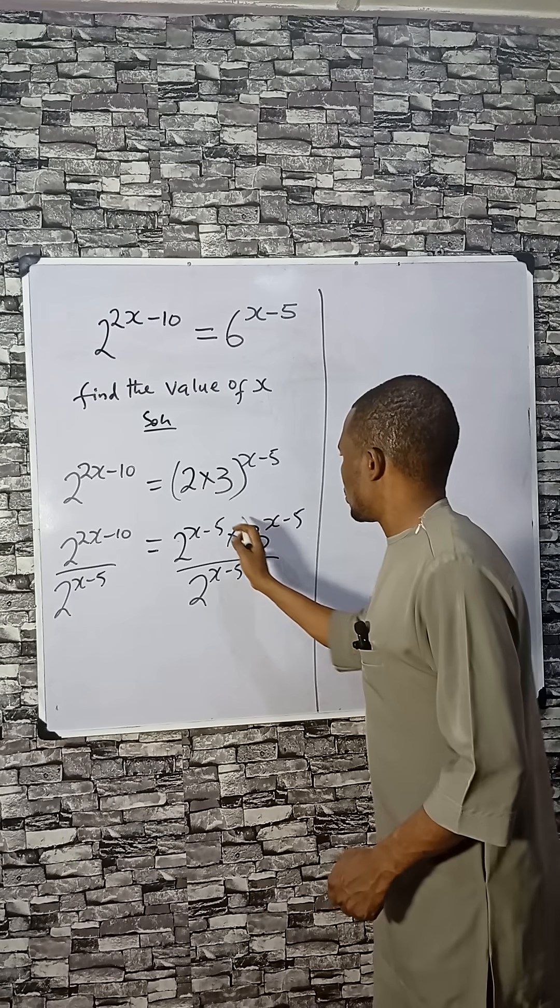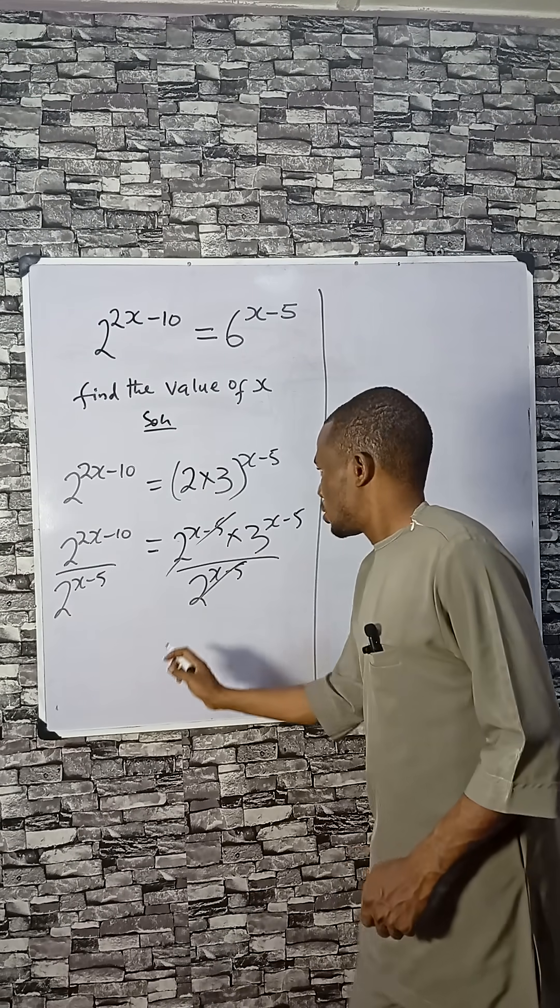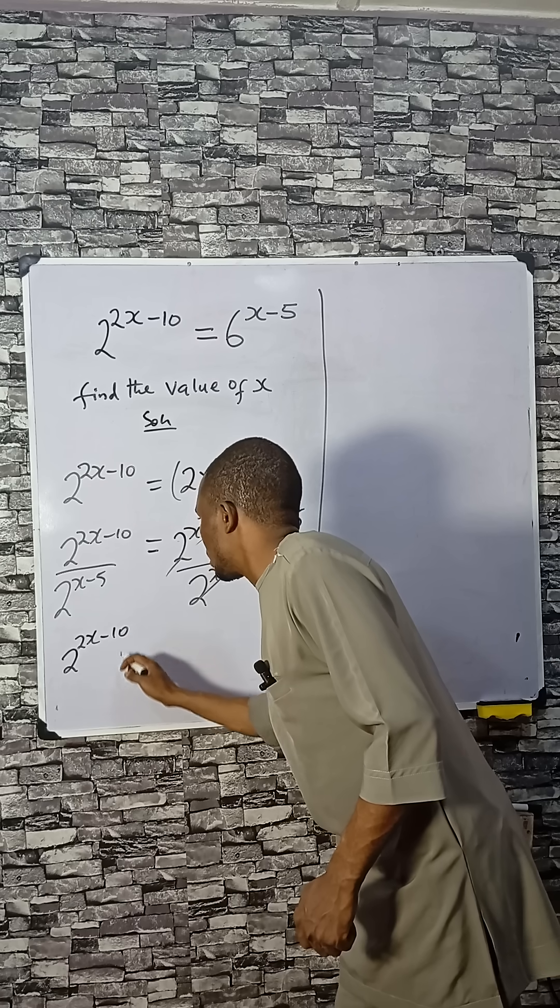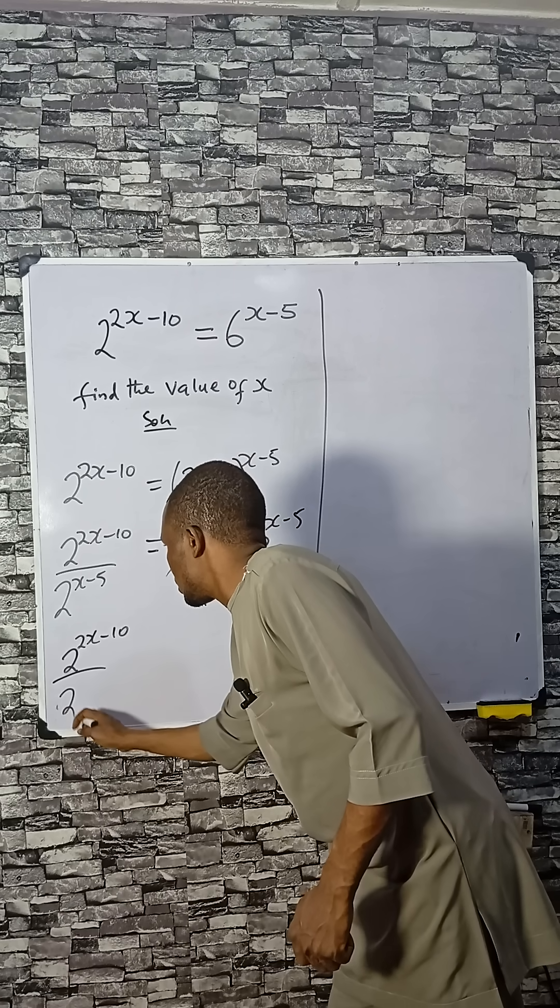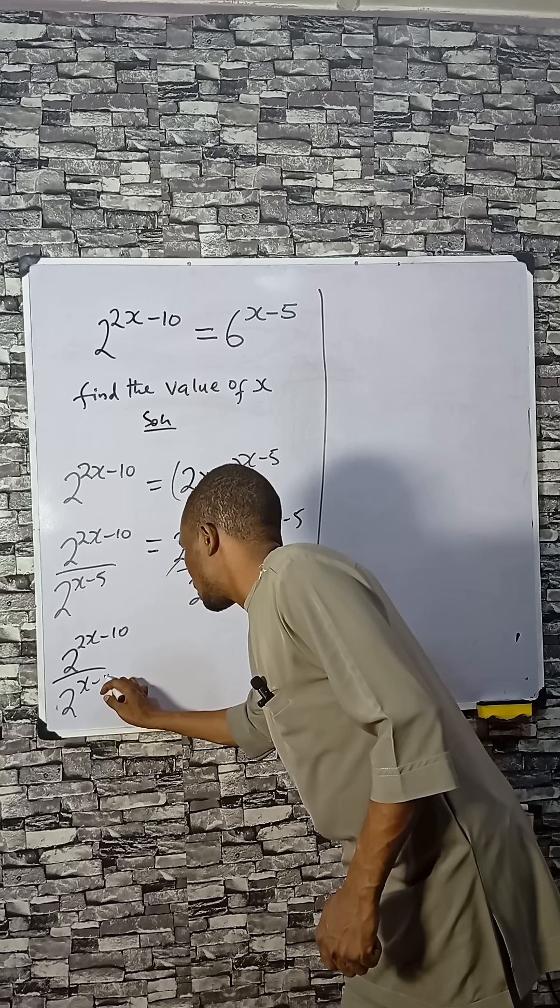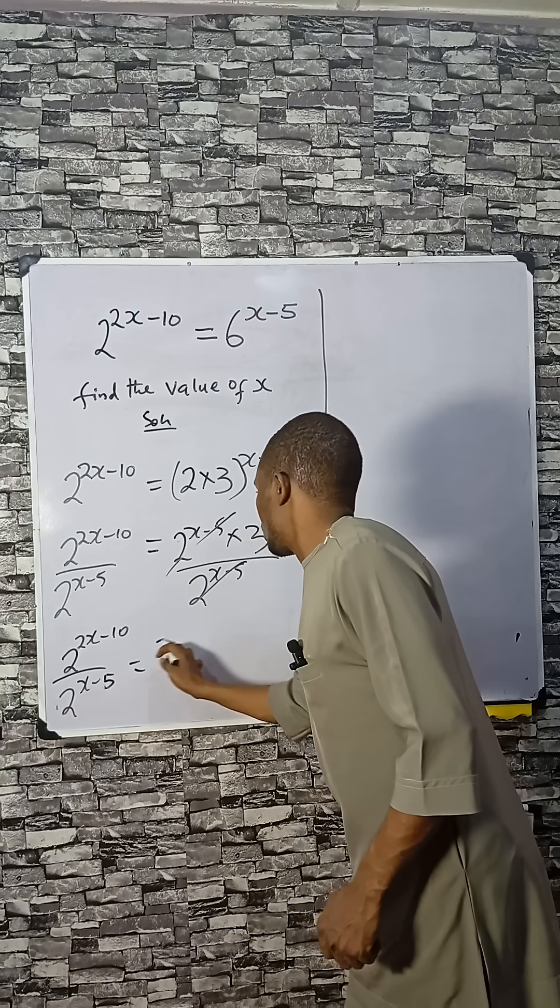If that happens, this will take care of this. So we have 2 raised to the power 2x minus 10 divided by 2^(x-5), which equals 3^(x-5).